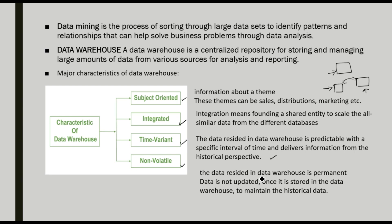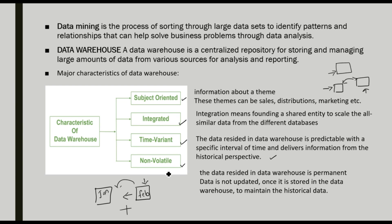Next is non-volatile. The data residing in a data warehouse is permanent — data is not updated once it is stored in the data warehouse, in order to maintain historical data. For example, even when a new month like February comes, we keep both datasets in the data warehouse. So that is what we call non-volatile — we keep it for the future.